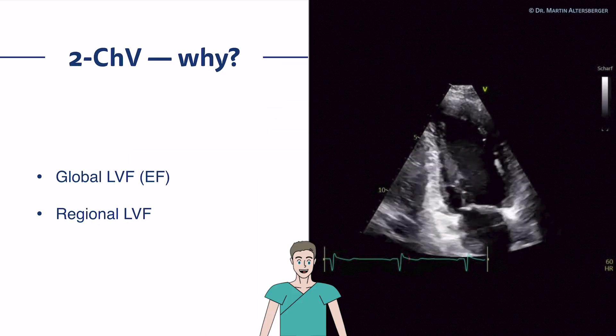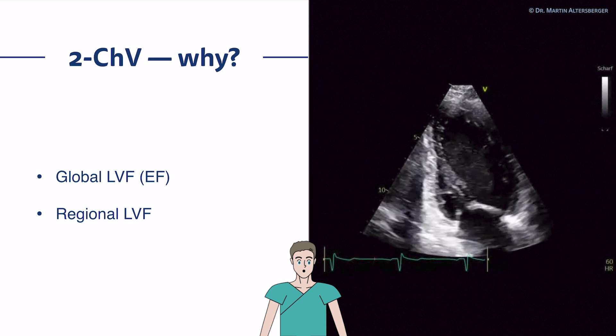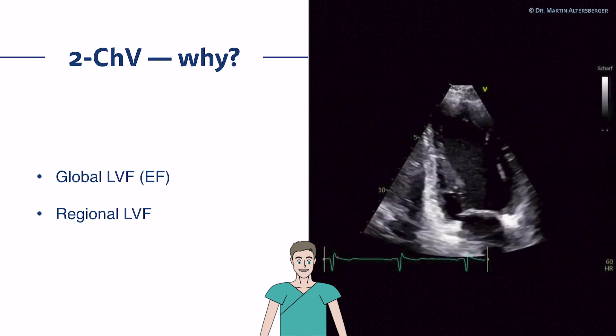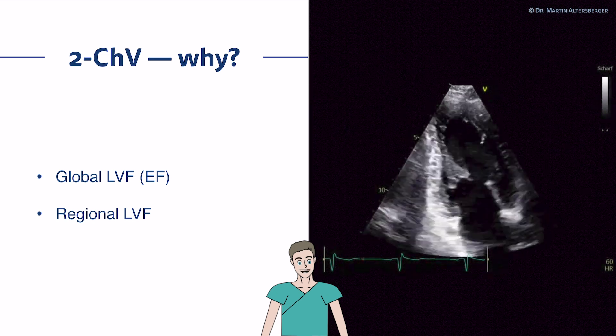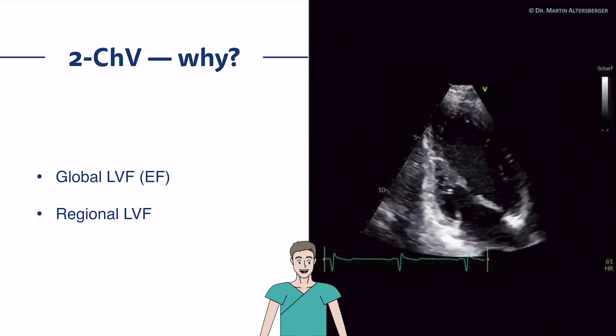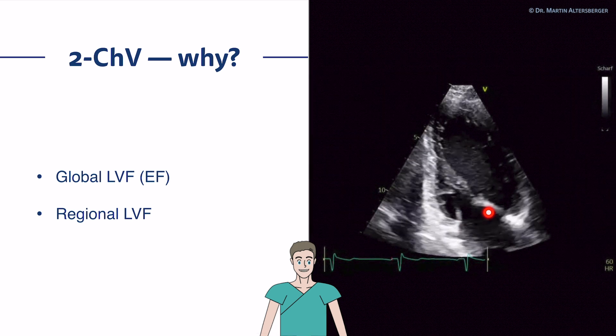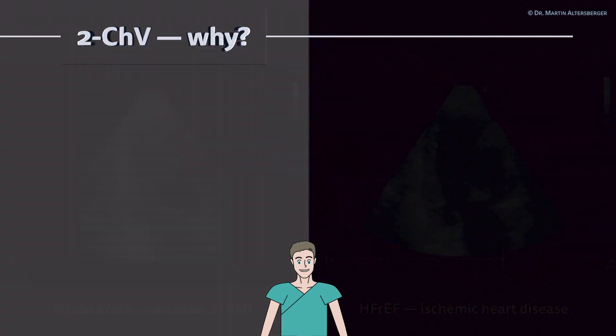Why the two-chamber view? It's about the global longitudinal function, the ejection fraction, wall motion abnormalities as a regional left ventricular function, and also about the valvular and atrial structures.